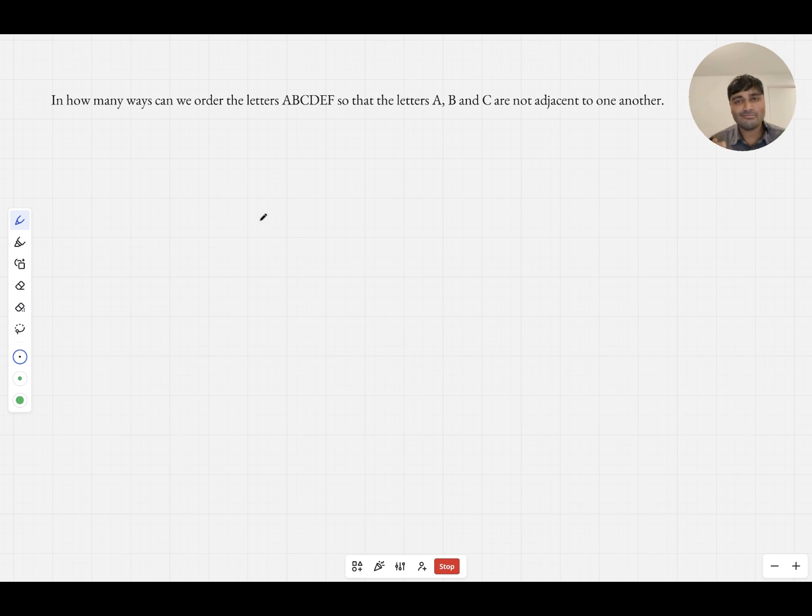Okay, I'm going to go into student mode. This is an interesting looking problem. I guess we have kind of six slots, and we're placing the six letters A, B, C, D, E, F in these six slots, and we want A, B and C to not be adjacent to one another.